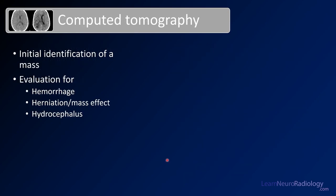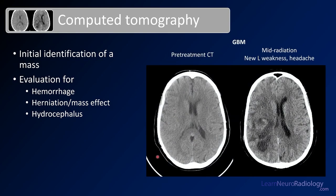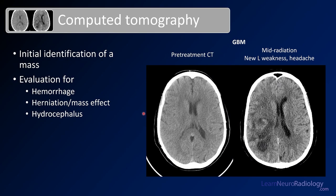CT is for initial identification of a mass, evaluation for hemorrhage, herniation or mass effect, and hydrocephalus. Here you see a patient with a glioblastoma before they started treatment. On CT you don't really see a whole lot — pretty symmetric ventricles, maybe a little mass effect on the occipital horn of the right lateral ventricle. Then the patient came in during radiation therapy with new left-sided weakness and headache, and there's a lot more edema in the right cerebral hemisphere, maybe some areas of hemorrhage — complications with worsening mass effect.